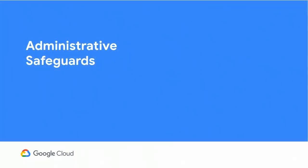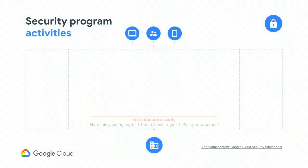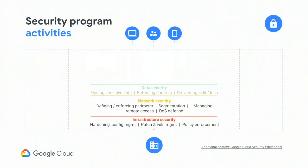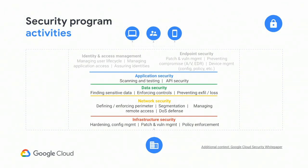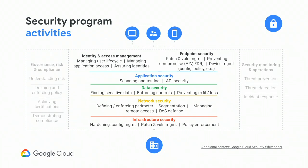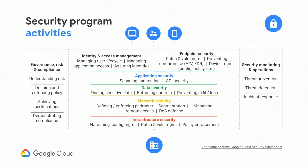Administrative safeguards — what are they? This is Google's security program. We design our security system with an approach we call defense in depth. Whereas the traditional security model is to have a hard perimeter — making it very hard for people to get onto your network using things like tough firewalls, VPNs, and bastion hosts.